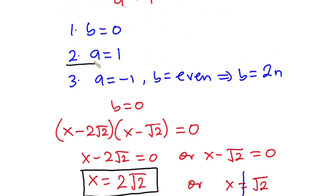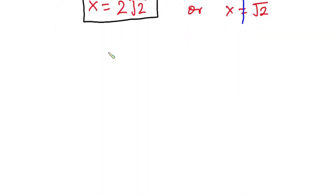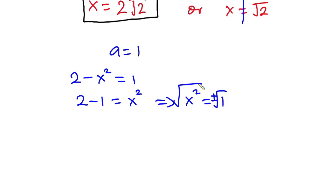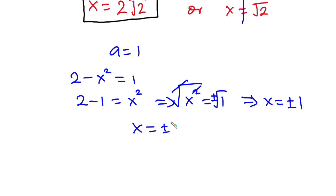Now let's consider the second case, where a equals 1. If a equals 1, then 2 minus x² equals 1. Making x² the subject, we get 2 minus 1 equals x², so x² equals 1. Taking the square root on both sides, x equals plus or minus 1. This is a solution to the problem.